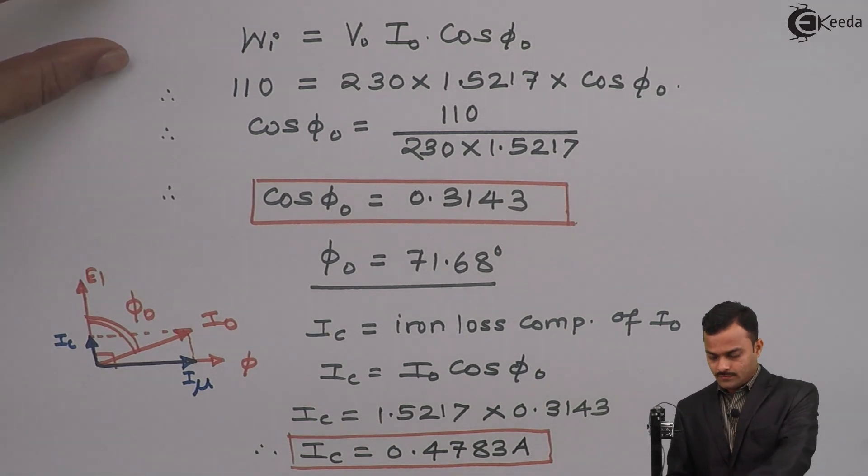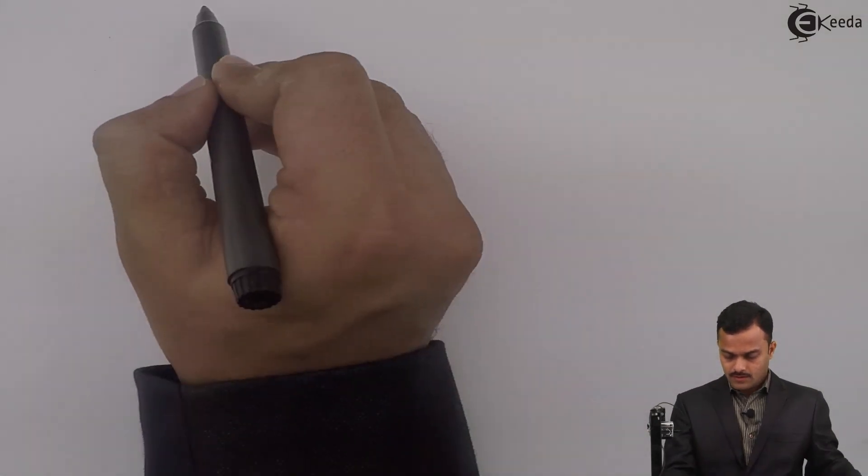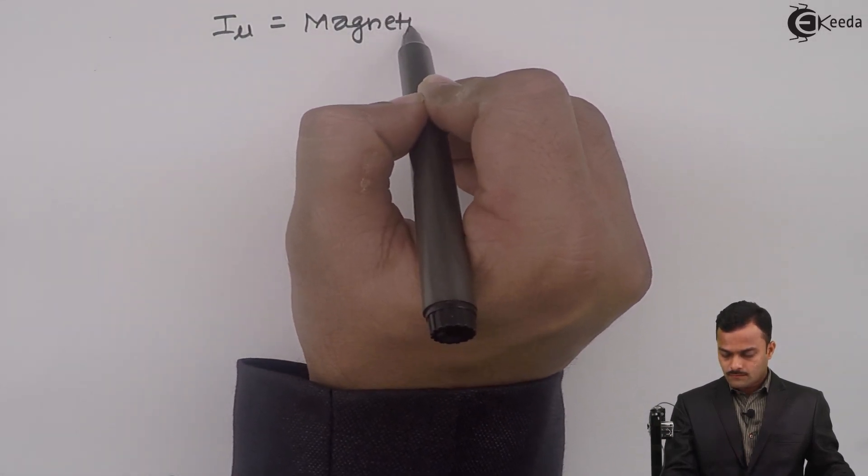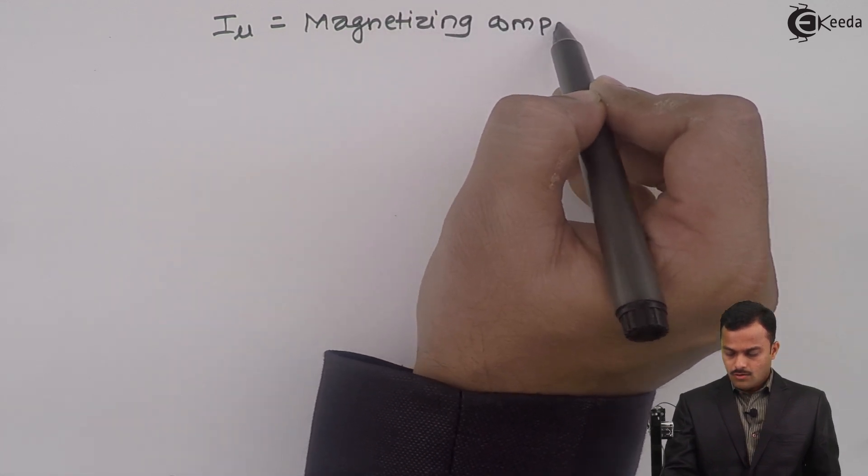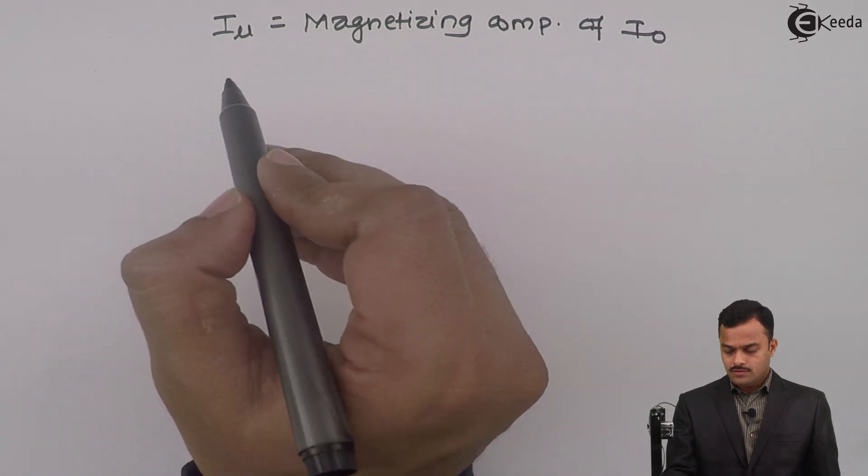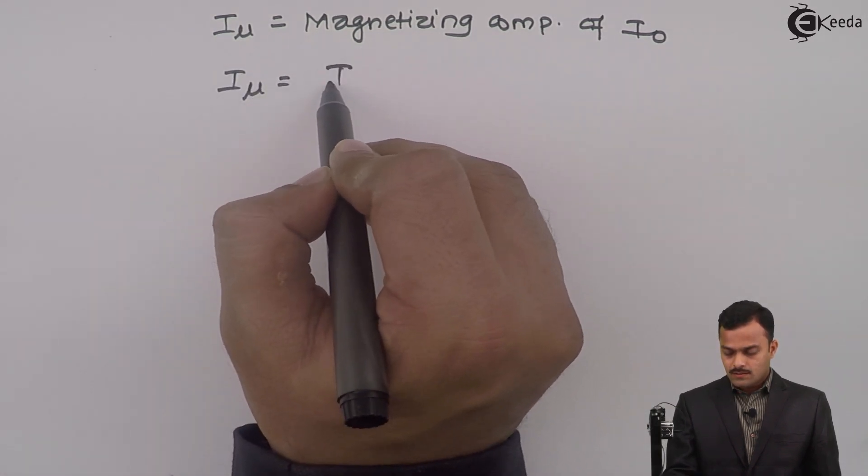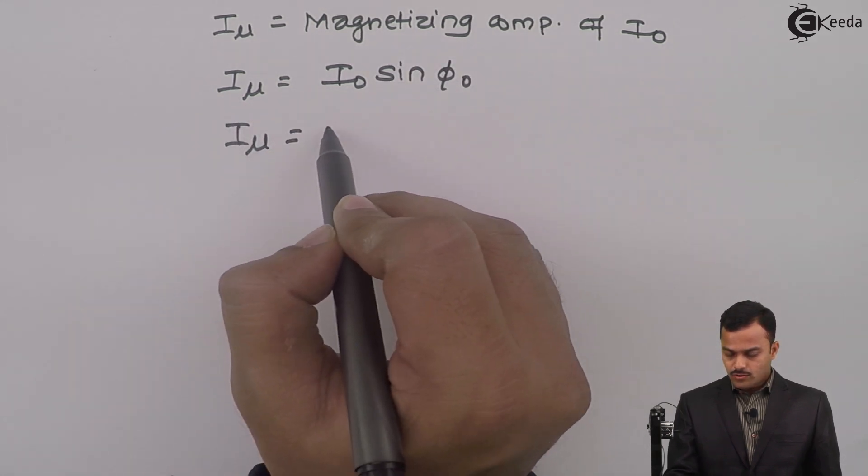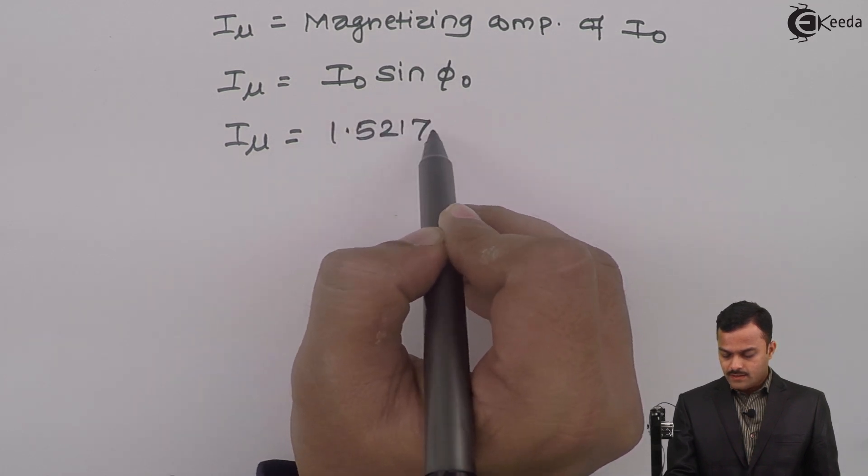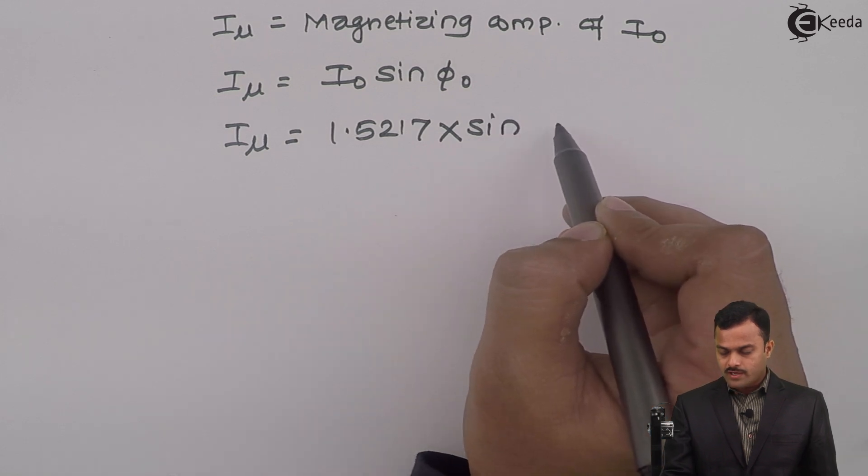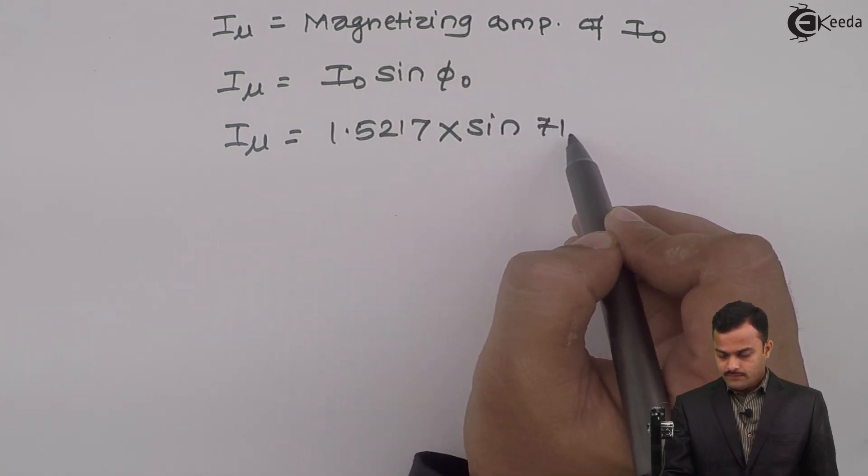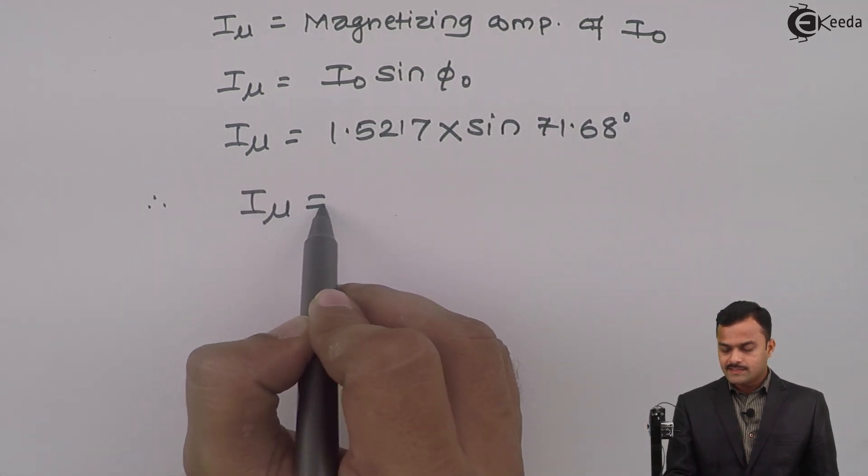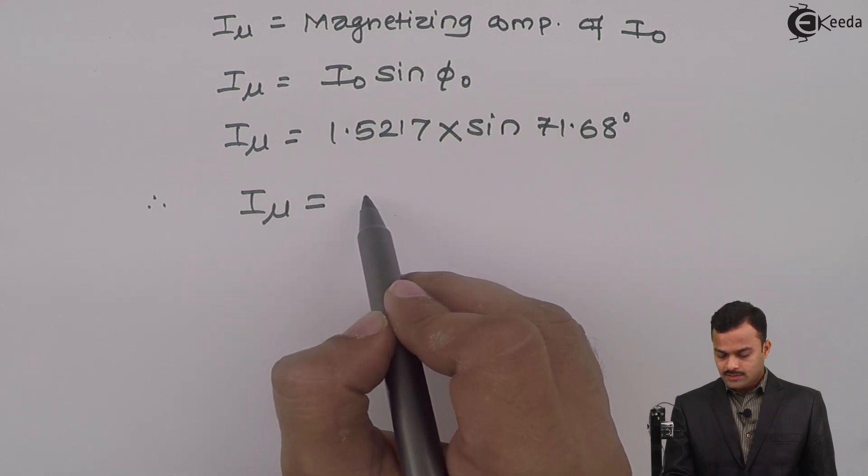Similarly I can get I_μ. What is I_μ? It is magnetizing component of the no load primary current I₀, and from the diagram it is I₀ sin φ₀. I₀ is 1.5217 multiplied by sin φ₀, we have calculated as 71.68 degrees. So if you solve you will get magnetizing component I_μ = 1.4446 ampere. This is the required answer.